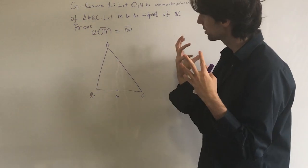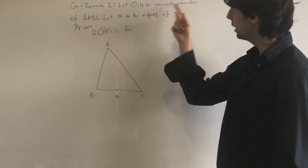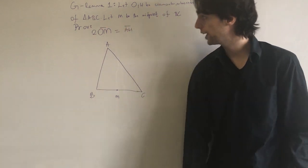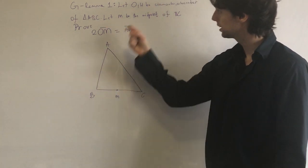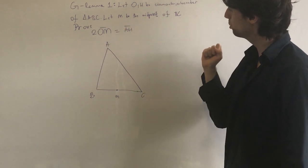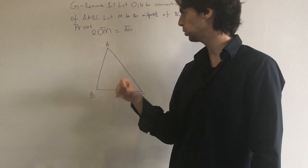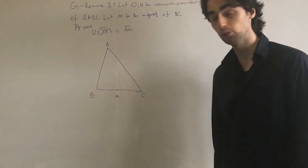So let O be the circumcenter and H be the orthocenter of triangle ABC. Let M be the midpoint of BC. Prove that 2 times OM is equal to AH.